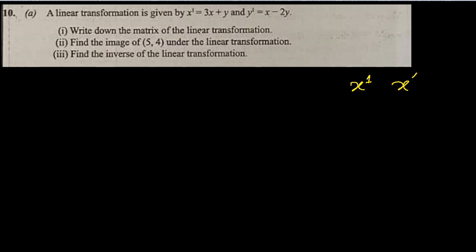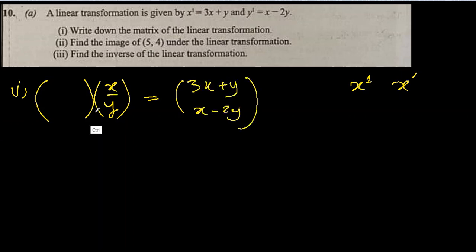For the first part, we write the matrix for the linear transformation. We need x, y as our point with the transformation matrix in front so that their multiplication becomes 3x plus y and x minus 2y. Whatever the coefficients are here, we write them in the matrix: 3, 1, 1, minus 2. If I multiply these now, 3 times x is 3x plus 1 times y is y. This is the linear transformation matrix.